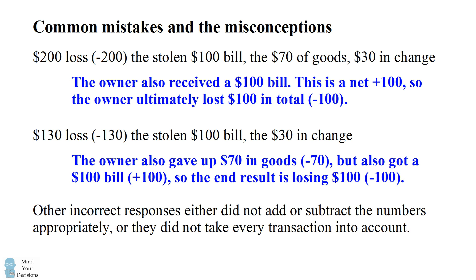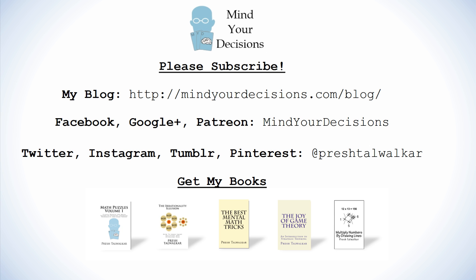To summarize, most of the incorrect responses either didn't add or subtract the numbers correctly, or they didn't take into account every transaction. It seems that in the second half of the story, the person used the stolen dollar bill, but somehow people don't treat that as a genuine $100 bill — that is $100 that the owner is getting back. When you take into account every single transaction and treat it correctly as either a loss or a gain for the owner, you end up with the owner losing $100. Did you figure it out? If you liked this video, please check out my books — there are links in the description.